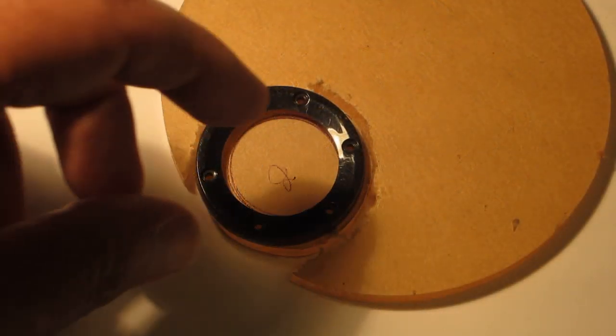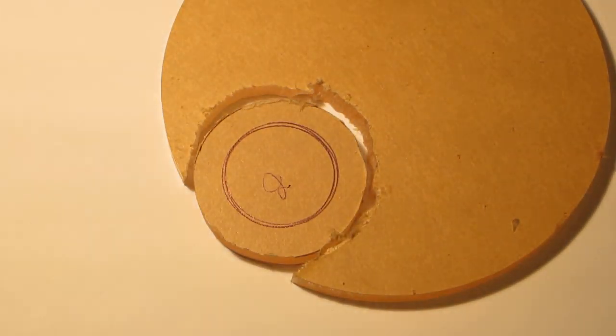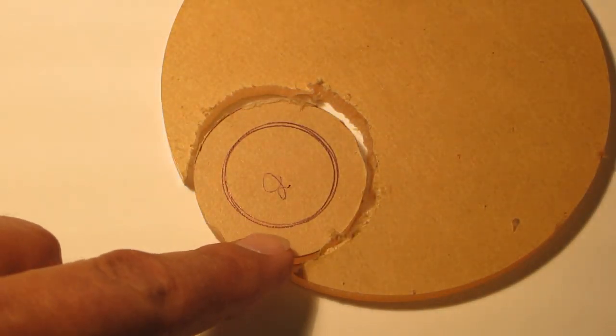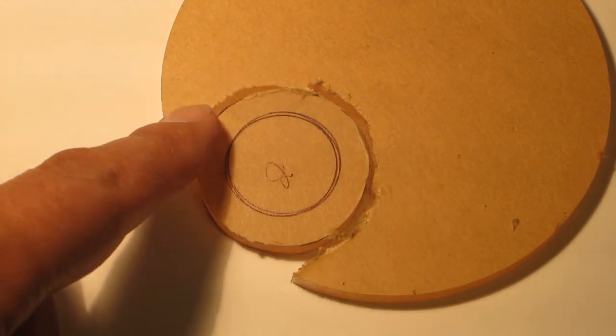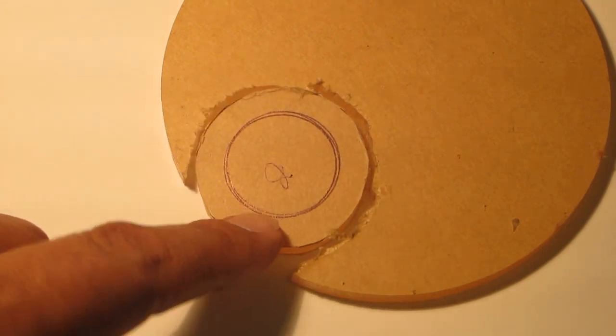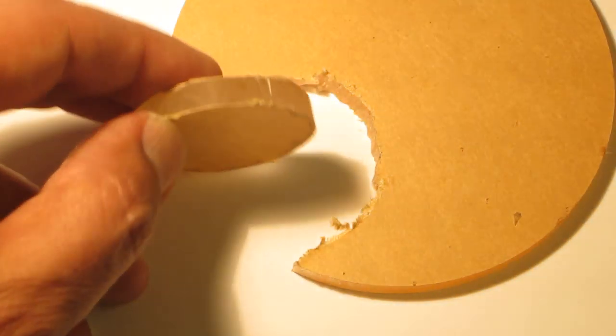Next, I used the black ring to trace out the size of the flat lens cover. I used a coping saw to cut it out and then I used sandpaper to smooth out the edges.